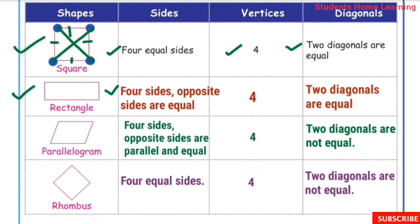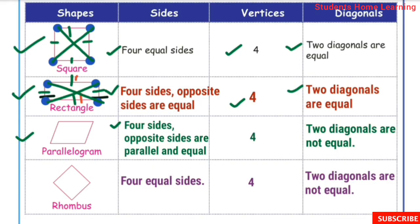Next one: rectangle. Rectangle has 4 sides; opposite sides are parallel and equal. Rectangle has 4 vertices. This shape is a parallelogram with 4 vertices.